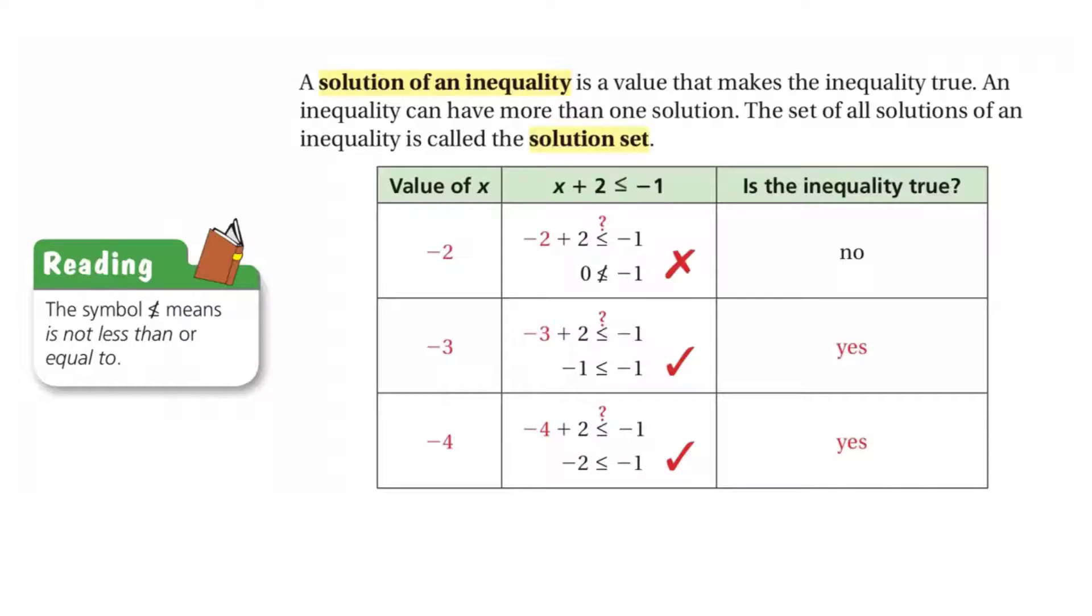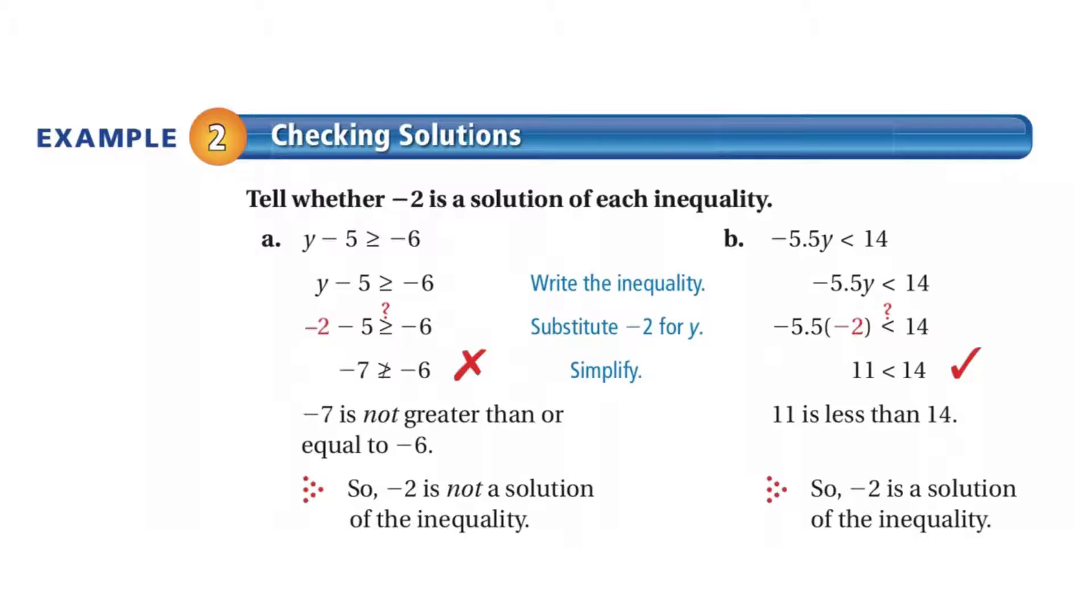For example 2, checking solutions. Tell whether negative 2 is a solution of each inequality. So, we put negative 2 in place of the variable. So, for y minus 5 is greater than or equal to negative 6, if we put negative 2 in there, it becomes negative 2 minus 5 is greater than or equal to negative 6. Negative 2 minus 5 is negative 7. Is negative 7 greater than or equal to negative 6? No. Negative 7 would be less than negative 6. So, it is not a solution to that inequality.